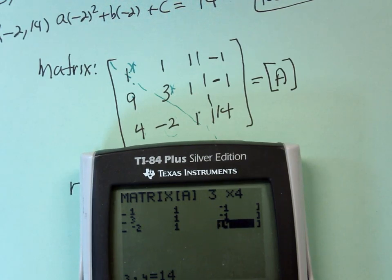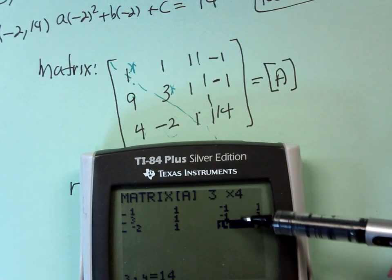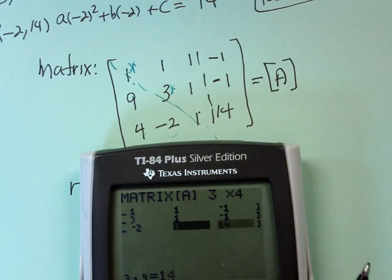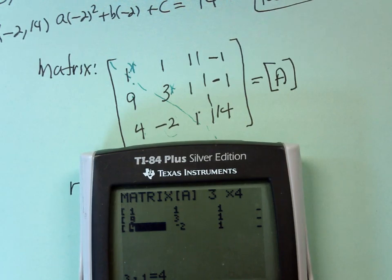Now I've typed it in rows, and since I typed it in rows, I'm going to check it in columns. So I have a negative 1, a negative 1, and a 14. And then I have all 1s. And then I have a 1, a 3, and a negative 2. And then I have a 1, a 9, and a 4. And it looks like we've got it correct.